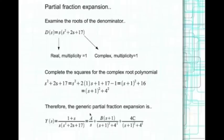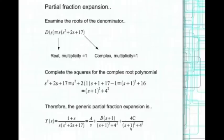Now we write the generic form of the partial fraction. The real root with multiplicity 1 contributes one term, and the complex root contributes two special terms. The term (s + 1) / [(s + 1)² + 4²] is the Laplace transform of e^(−t)cos(4t), and the term 4 / [(s + 1)² + 4²] is the Laplace transform of e^(−t)sin(4t).